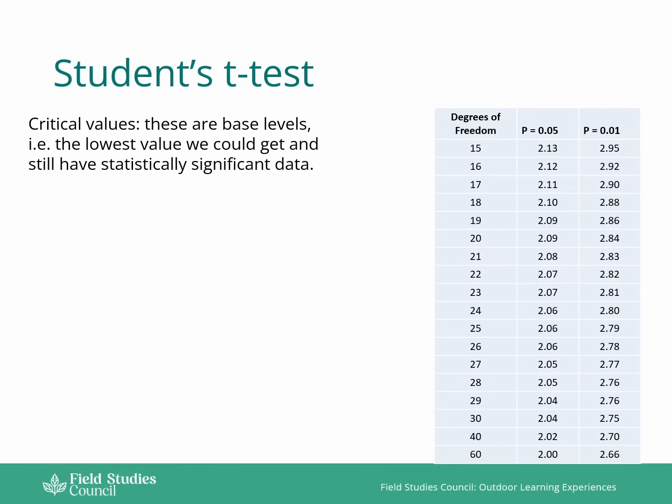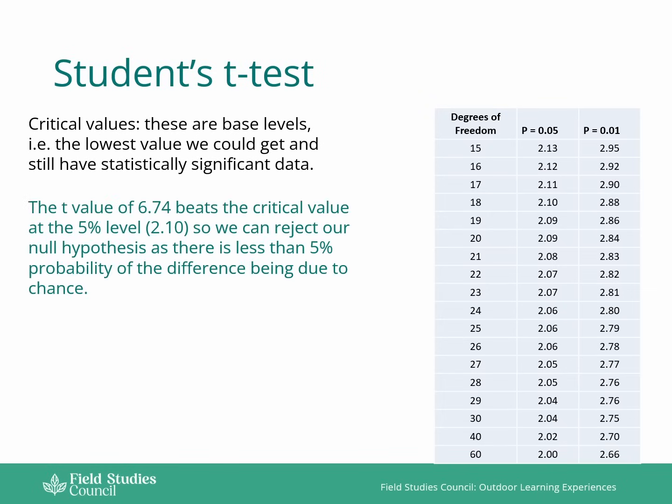If we look up our degrees of freedom, which we said were 18, then if we check the 5% significance level, so the one that says p equals 0.05, then we have a critical value of 2.10. Our t-value of 6.74 is higher than the critical value at the 5% level, which is 2.10.